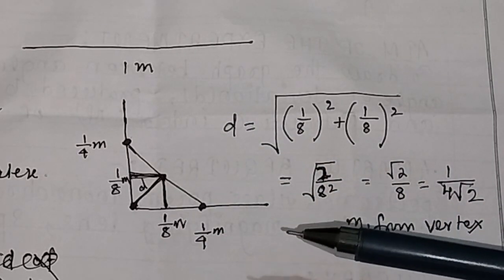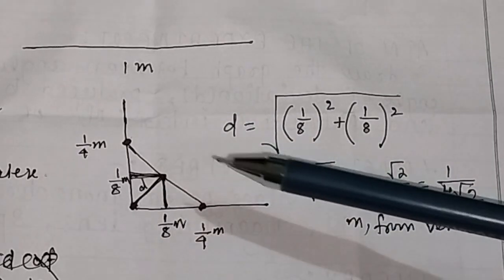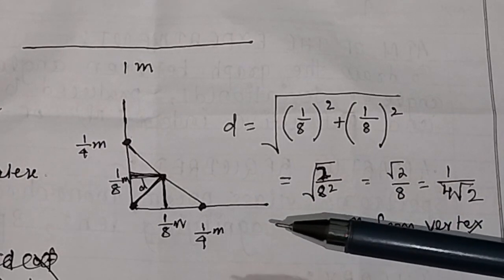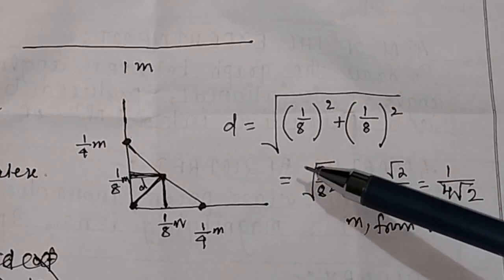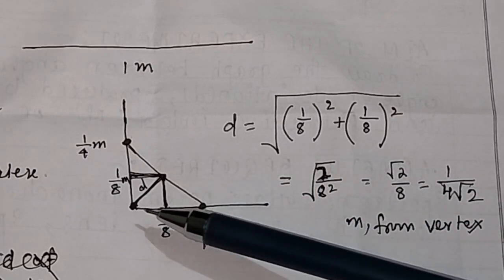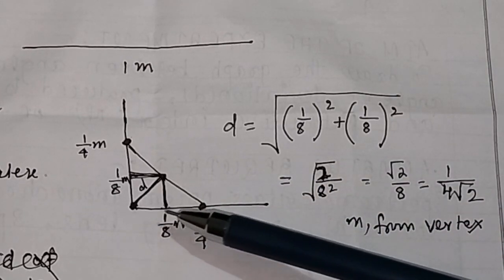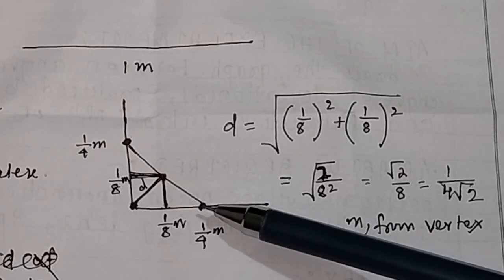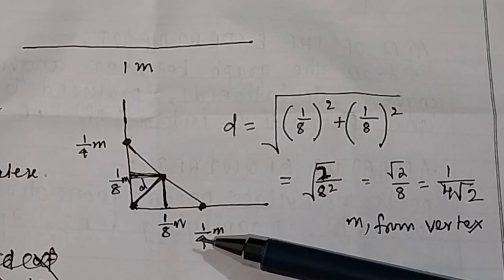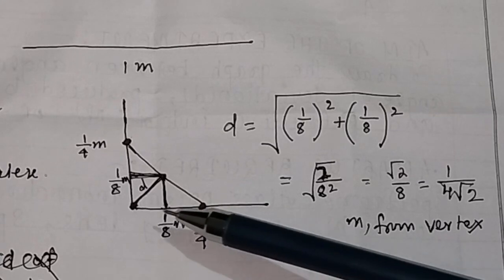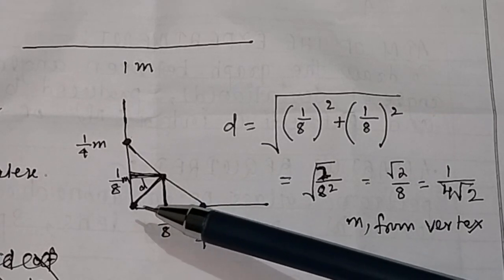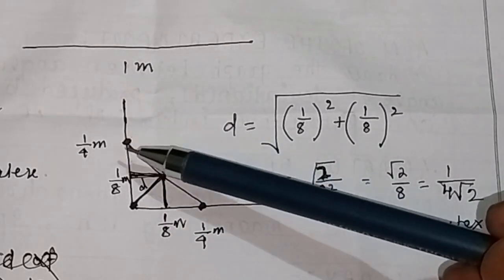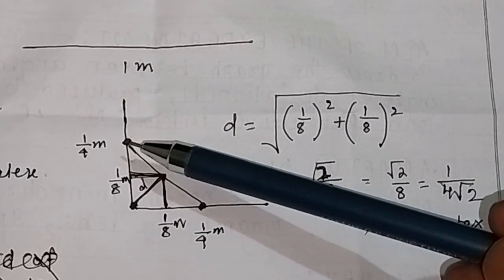It is not simple to find out the center of mass of a bent rod, but we can find it in this way. For each half-meter arm, the center of mass will be at a distance of 1/4 meter from the vertex. Similarly, the center of mass for the other half is also at 1/4 meter — so we mark both points.